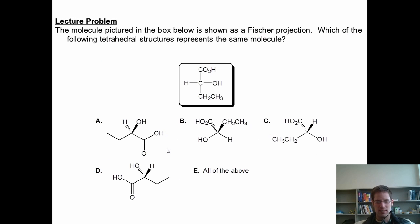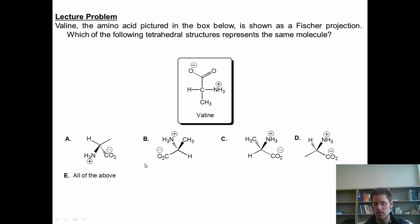So here's my first example. The molecule pictured in this box is drawn as a Fischer projection. Which of the following tetrahedral structures represents the same molecule? And here's another. Valine, the amino acid pictured in this box, is shown here as a Fischer projection. Which of the following tetrahedral structures represents the same molecule?